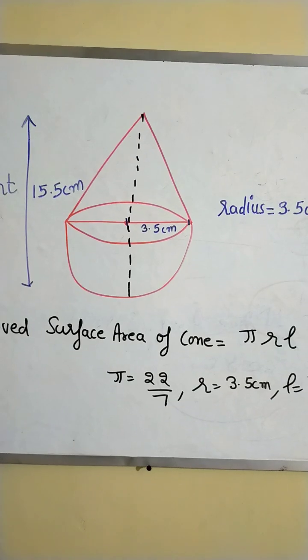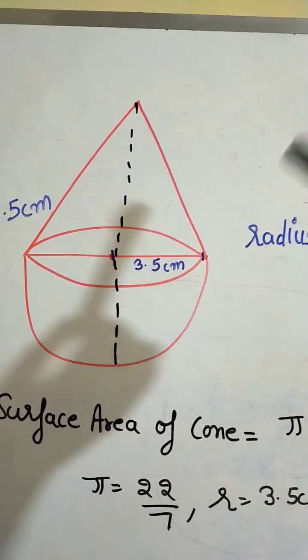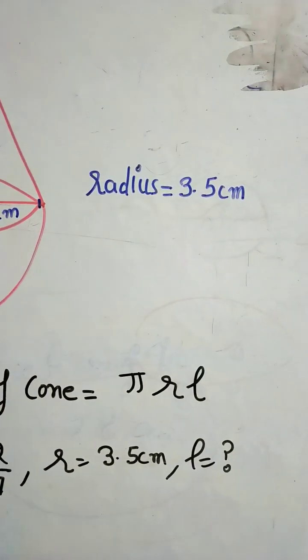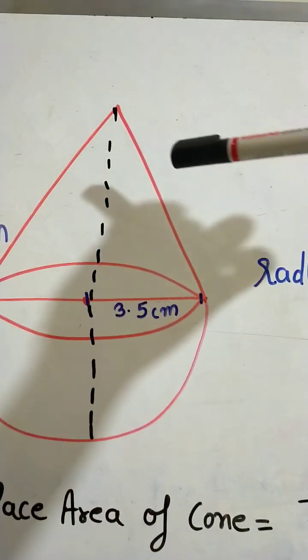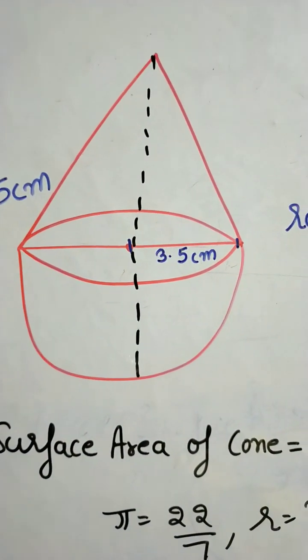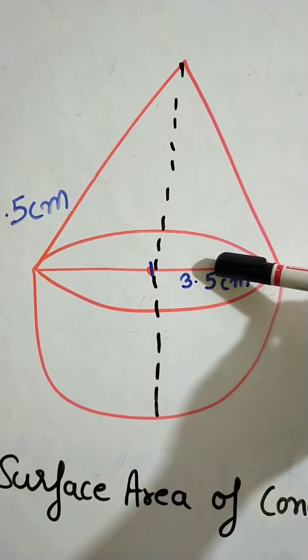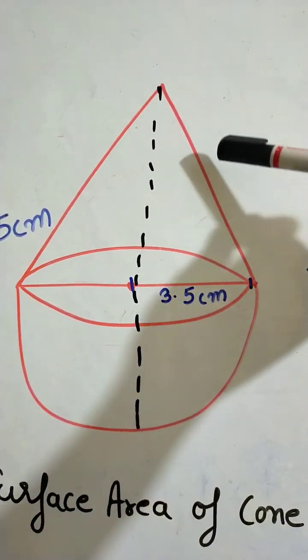We know pi equals 22 by 7, r is 3.5 cm, but we don't know what is l. l is this slant height. For this we will apply the formula h square plus r square equals l square.